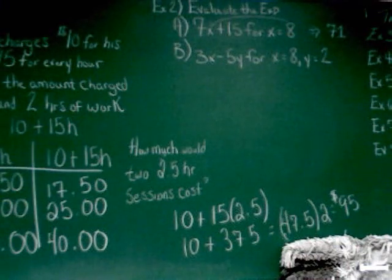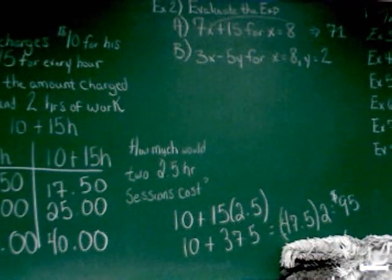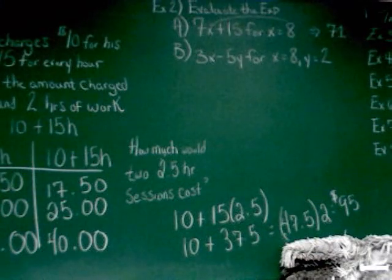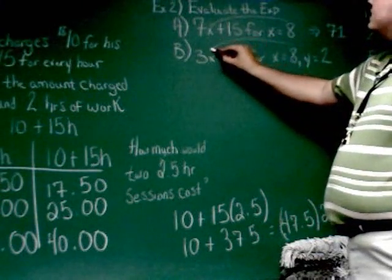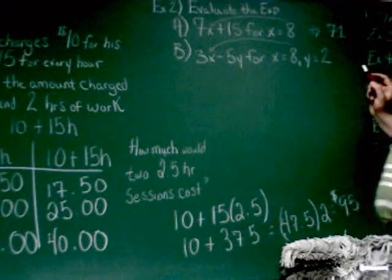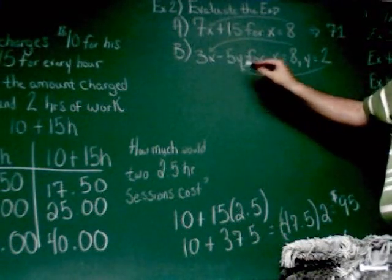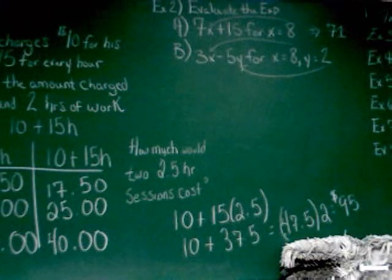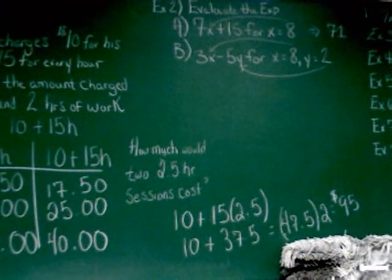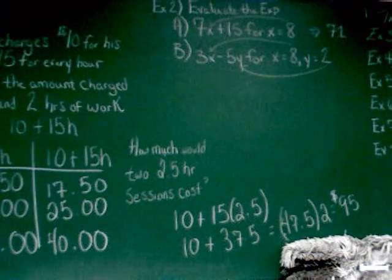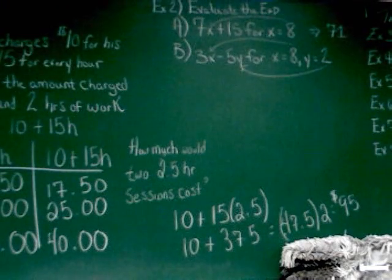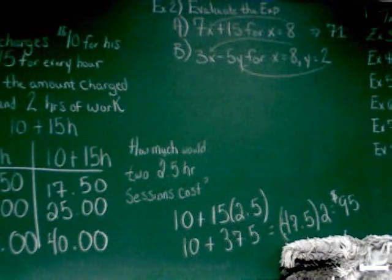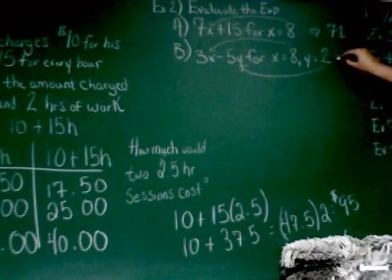All right, 3x minus 5y when x is 8 and y is 2. So again, I've got to put 8 in for x, just like I did in the last problem. And this one, they tell us y has to be 2, so I'm going to change that. Okay, so the first part there is 3 times x. If x is 8, so I'm doing 3 times 8, that's 24. And the other part is 5 times 2, that's 10. 24 minus 10, 14.